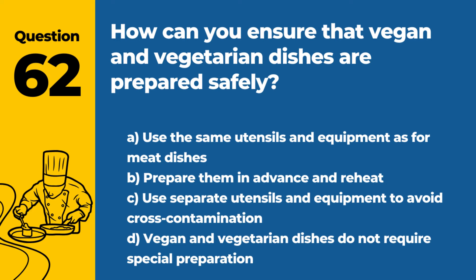Question 62. How can you ensure that vegan and vegetarian dishes are prepared safely? a. Use the same utensils and equipment as for meat dishes. b. Prepare them in advance and reheat. c. Use separate utensils and equipment to avoid cross-contamination. d. Vegan and vegetarian dishes do not require special preparation. Answer c. Use separate utensils and equipment to avoid cross-contamination. Ensuring the safety of vegan and vegetarian dishes involves using separate utensils and equipment to prevent cross-contamination with meat or other animal products.